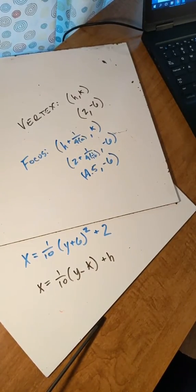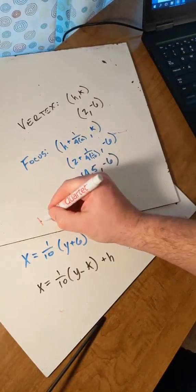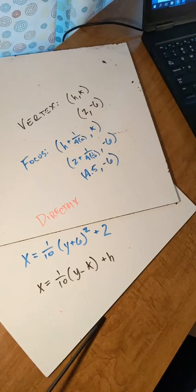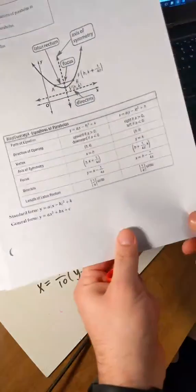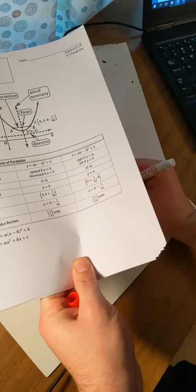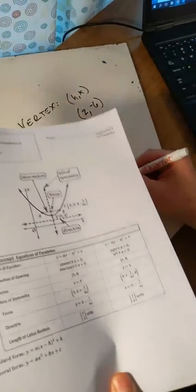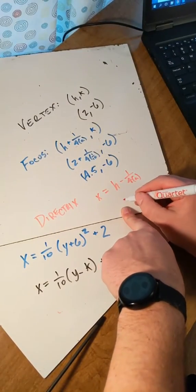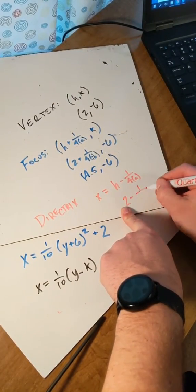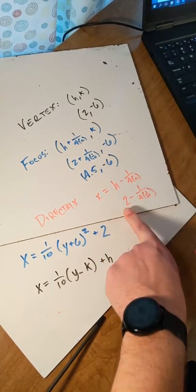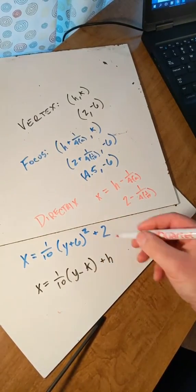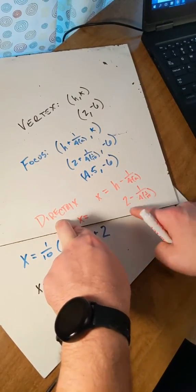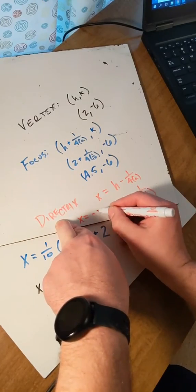And then the last thing we need to do, which is the directrix: for an x equals equation, it's x equals h minus 1 over 4a. So h is 2, minus 1 over 4 times 1 over 10. We can plug that into the calculator — that would be 2 minus 2.5, which is a negative 0.5. So the directrix is x equals negative 0.5.